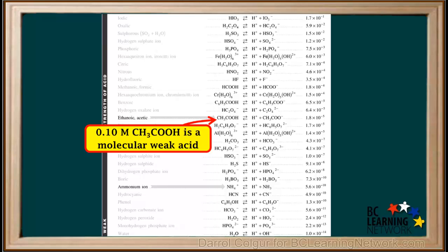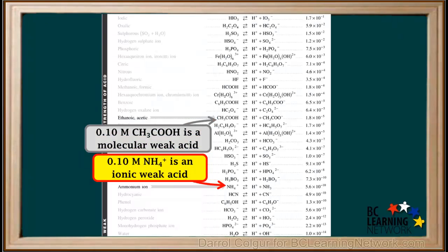And although NH4+ is a weaker acid than CH3COOH, NH4+ is an ionic weak acid. 0.1 molar NH4+ already has a high ion concentration, even before it undergoes acid ionization to form hydronium. Because it has a high ion concentration, it is a good conductor or strong electrolyte.